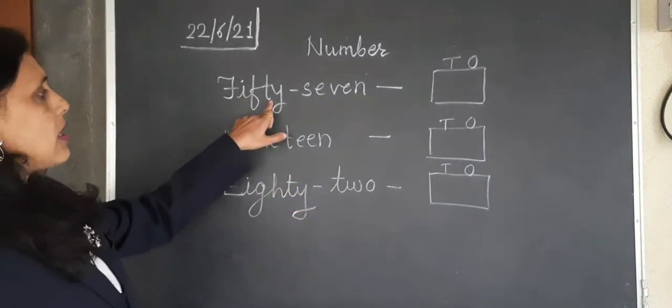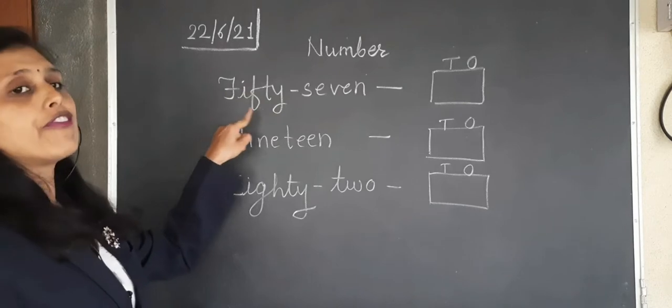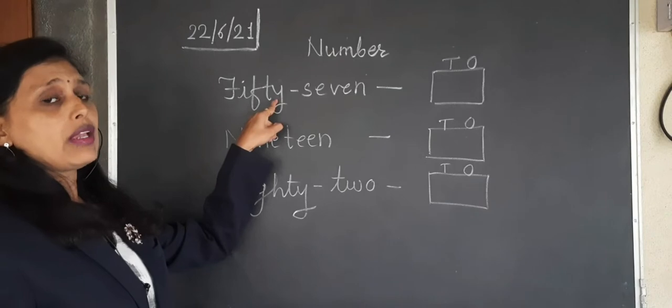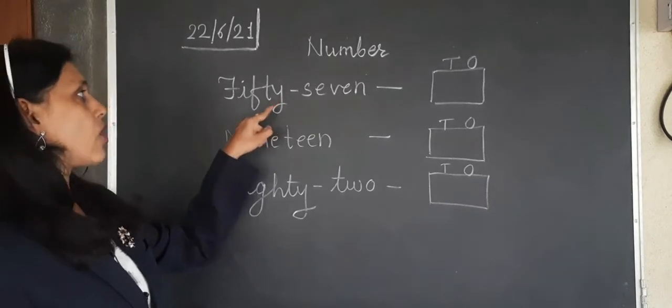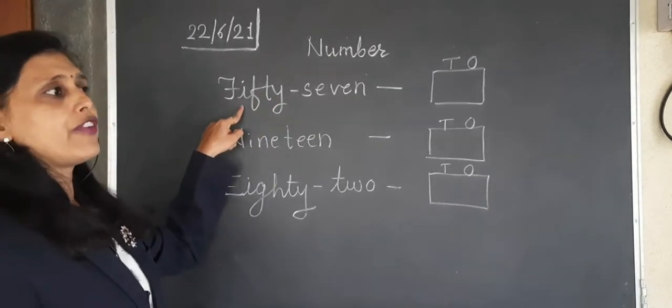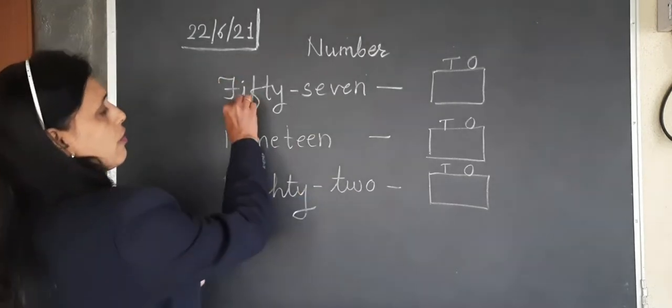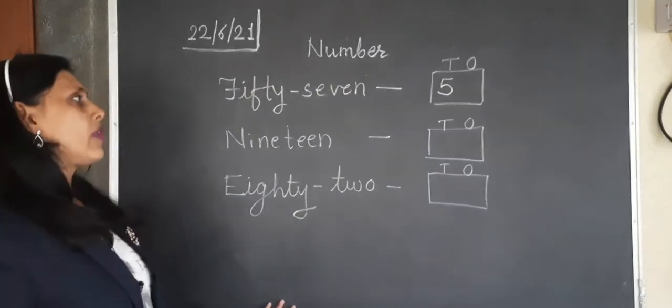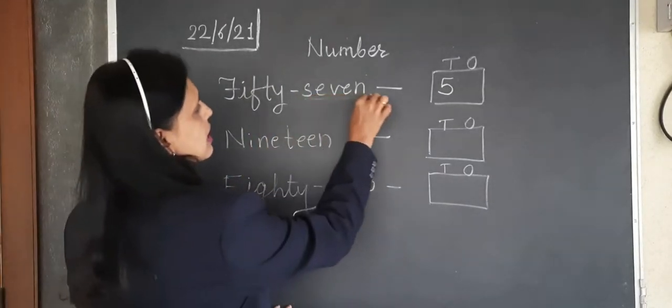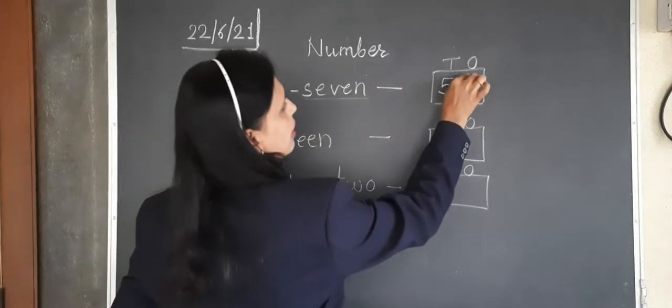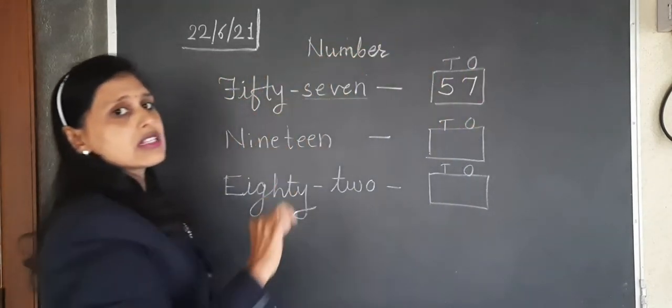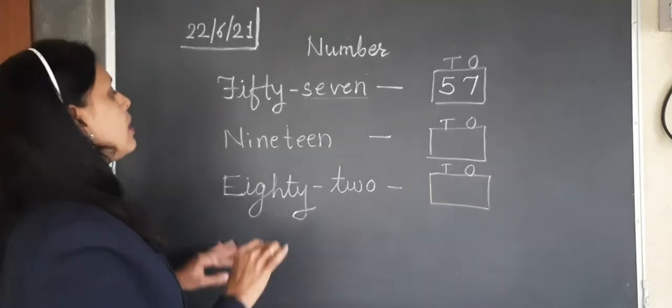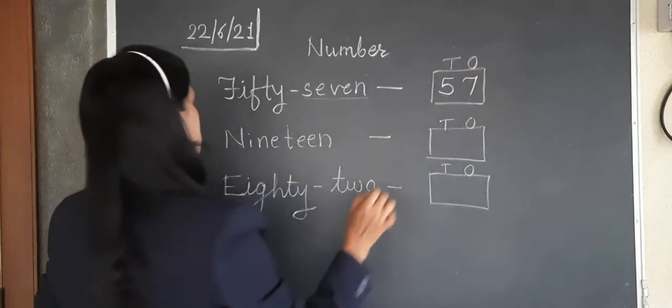Now see here. First word is fifty-seven. You see T-Y always coming under the tens column. T-Y is attached with fifty. Fifty means 5, so we are writing 5 in the T column. Then 7, a singular number 7, it will always come under the ones column. So 57 is our answer for this number.